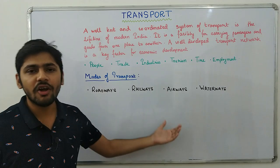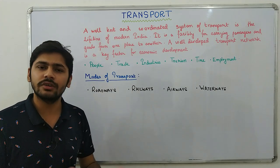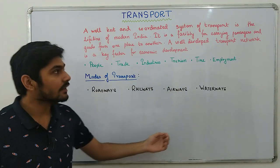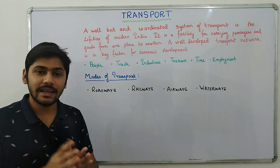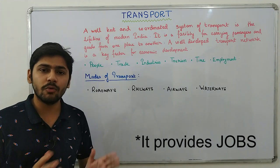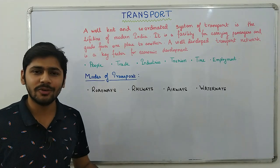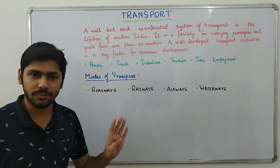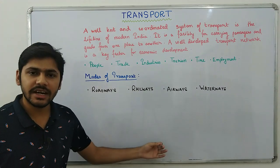Then time — we all know that time is money, and we want to save as much time as possible, so we use transport. Finally, employment. The transport sector of India provides employment to millions of people. Indian Railways is the biggest employer of our country, providing jobs to the most number of people. Now we will study four modes of transport: roadways, railways, airways, and waterways, one by one, beginning with roadways.